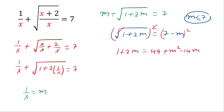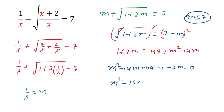If we take all the expressions to the same side, then m squared minus 14 times m plus 49 minus 1 minus 2 times m equals 0, which simplifies to m squared minus 16 times m plus 48 equals 0. This is a quadratic equation in terms of m, so we will apply the middle term split to find the value of m.